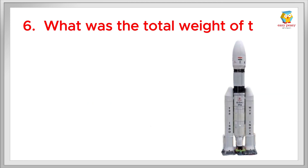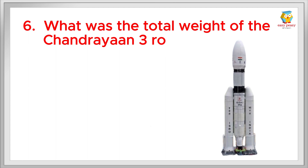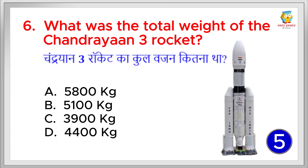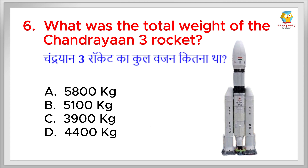What was the total weight of the Chandrayaan 3 rocket? Chandrayaan 3 rocket ka kul wazan kitna tha? The right answer is 3900 kg.